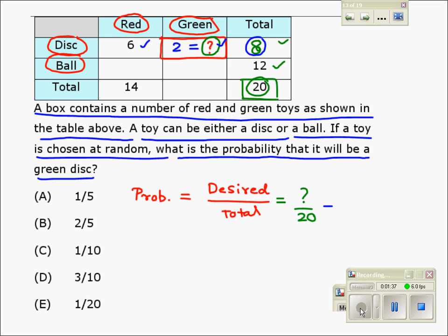We can replace the question mark with 2 in our expression and write it like this. Now, it can be reduced. Dividing by 2, we get 1 over 10. Thus, 1 over 10 is the probability of getting a green disc. Option C is correct. Thank you.